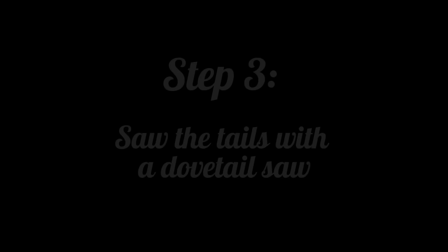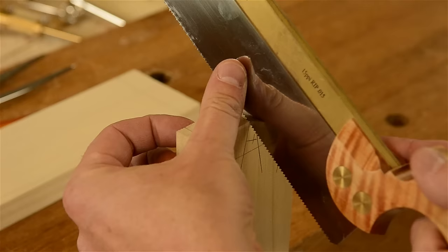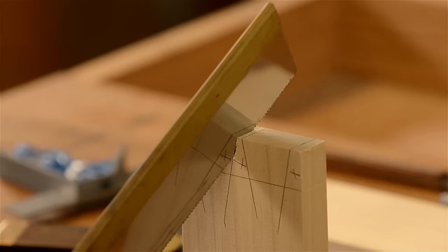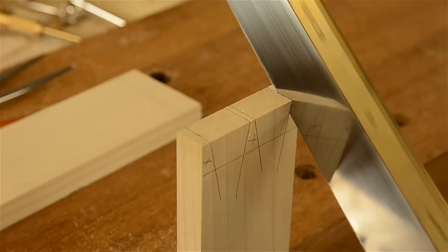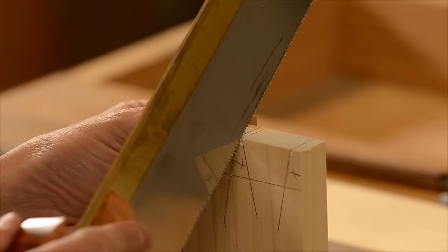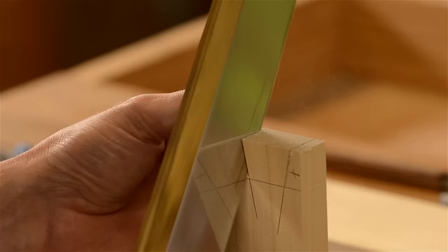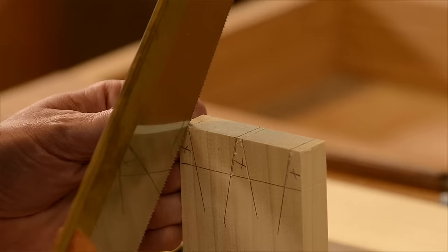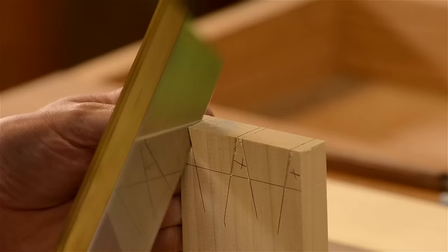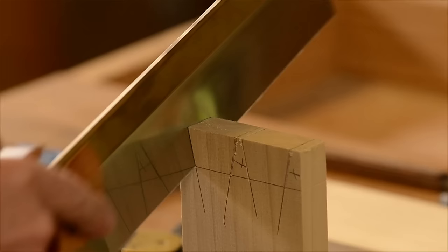The first thing I do is use my dovetail saw to cut in the waste area and right up next to the line. I try to leave just the pencil line and no more. Just be careful to watch your lines all the time, including your baseline, so you don't cut over it. You can see here how my saw cut is right up against the lines. I have left the lines and no more.